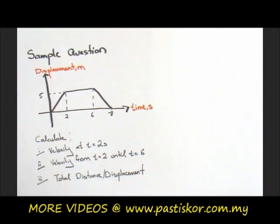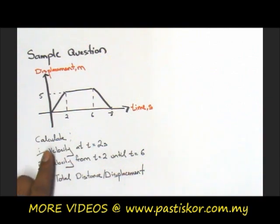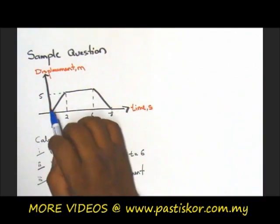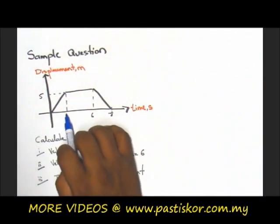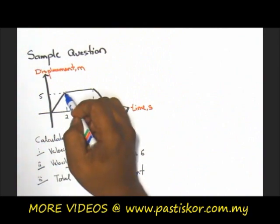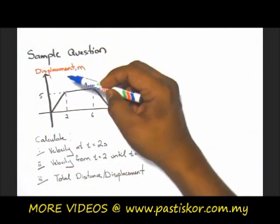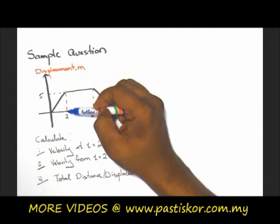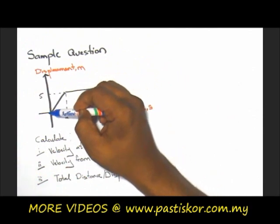This is a sample question over here that you have for displacement versus time. What we're going to do is calculate your velocity at time equals to 2 seconds. As you can see, time equals to 2 seconds. I have told you earlier that you need to take your y and divide it with your x.